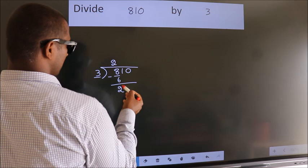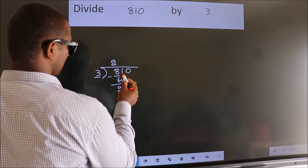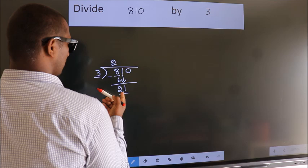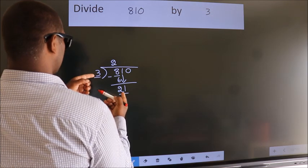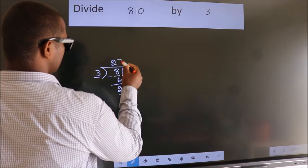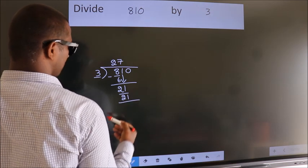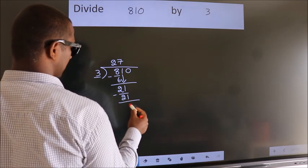After this, bring down the beside number. So 1 down. So 21. When do we get 21 in 3 table? 3 7s, 21. Now we subtract. We get 0.